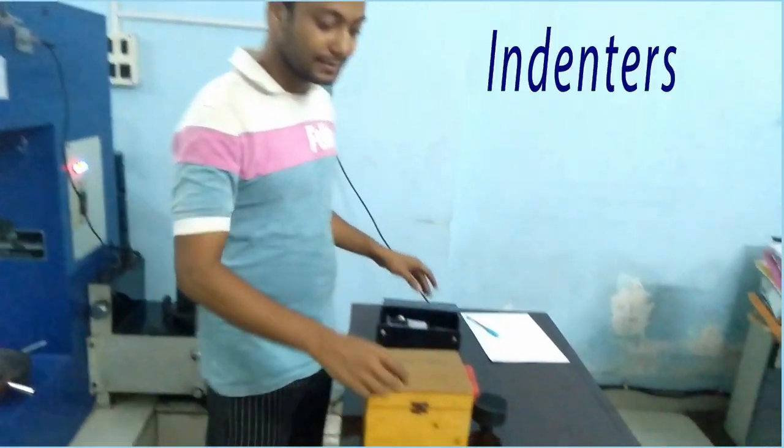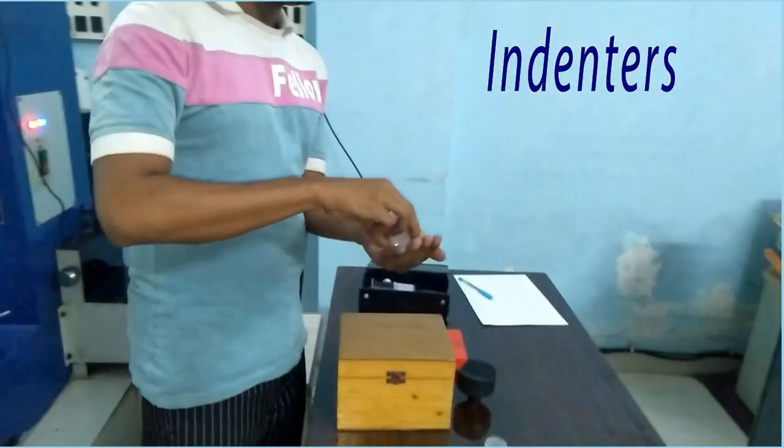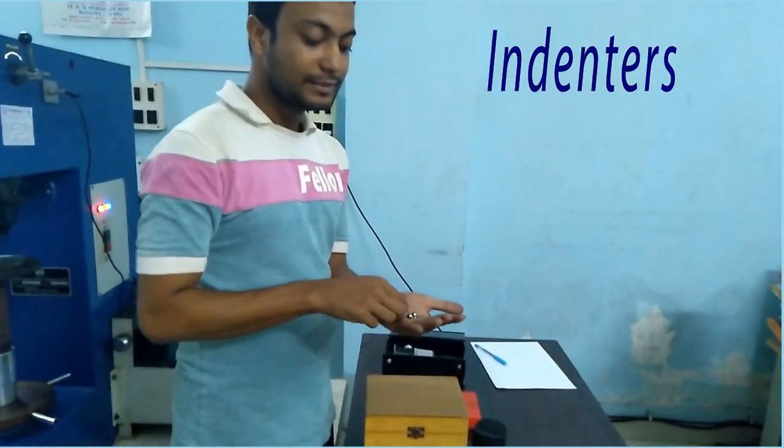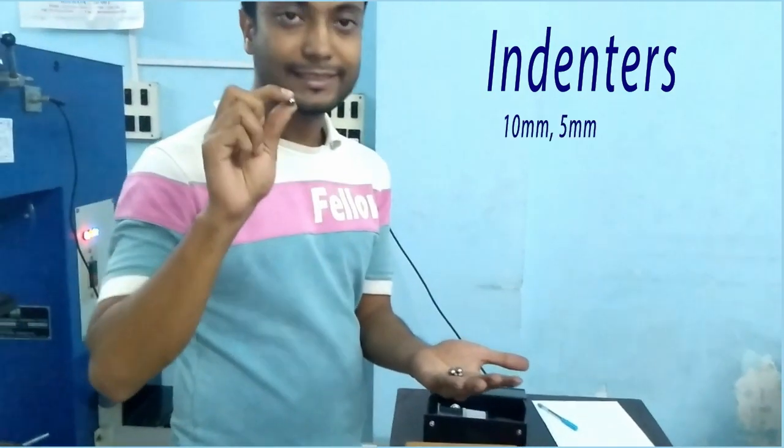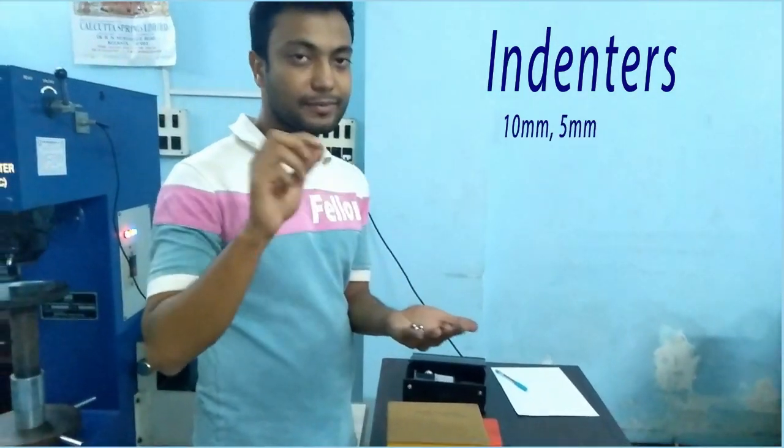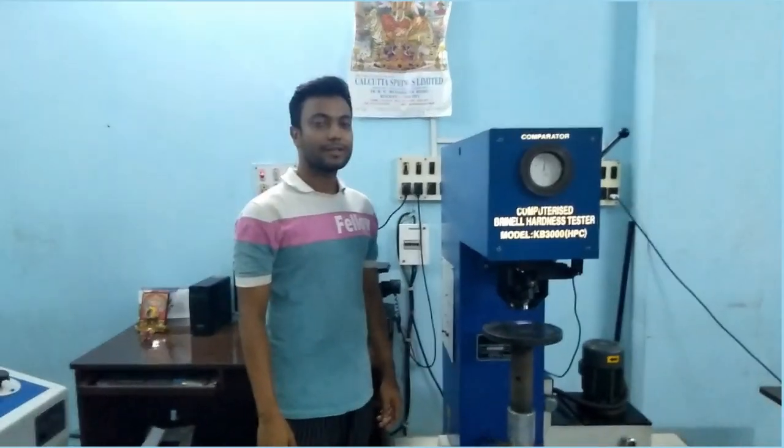And this is indenters. There are two types of indenters mainly. This is steel ball indenters. One is 10 mm and one is 500 mm. We can give load of 500 kg farad to 3000 kg farad.